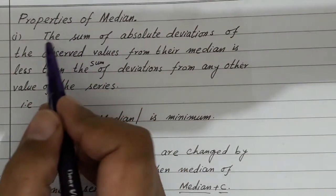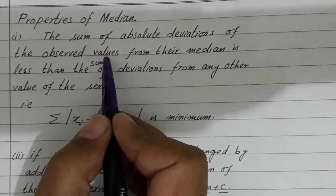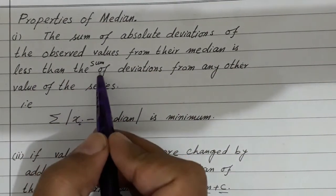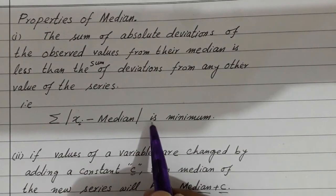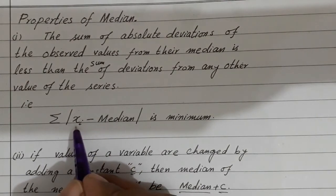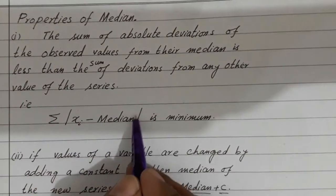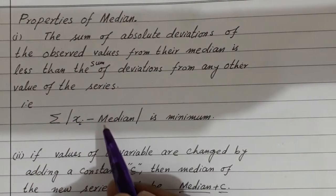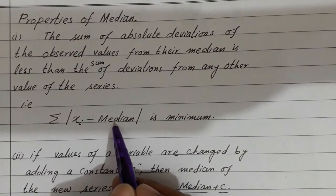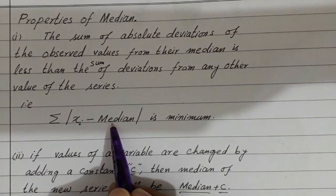Properties of median: The sum of observed absolute deviations of the observed values from their median is less than the sum of deviations from any other value of the series. That is, summation of |xi minus median| is minimum. Observed value میں سے median کو minus کیا جائے تو اس کو deviations کہا جاتا ہے، اور absolute deviation کو total کریں تو sum of absolute deviations آ جائے گا۔ اگر median کی جگہ کوئی اور value put کریں تو یہ minimum نہیں ہوگا — اس کو ایک example کے ذریعے سمجھنے کی کوشش کریں گے۔